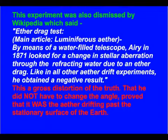This is a gross distortion of the truth. That he did not have to change the angle proved that it was the ether drifting past the stationary surface of the Earth.